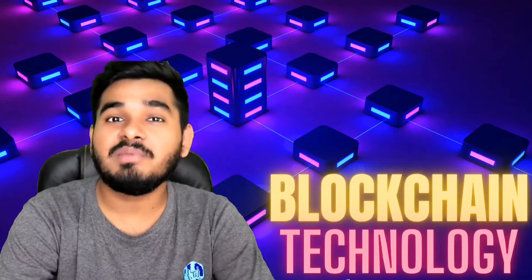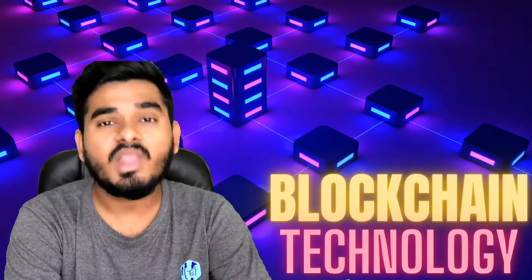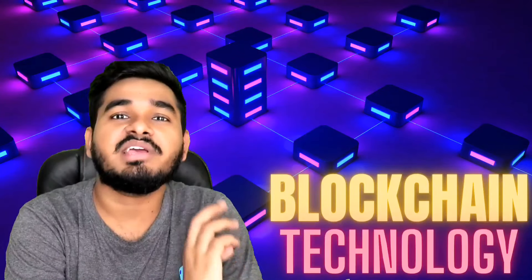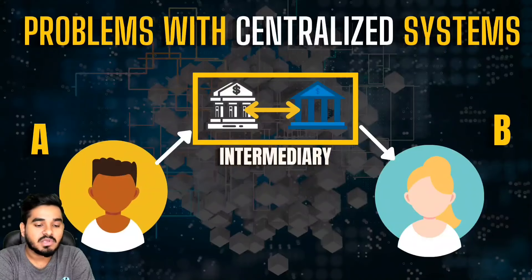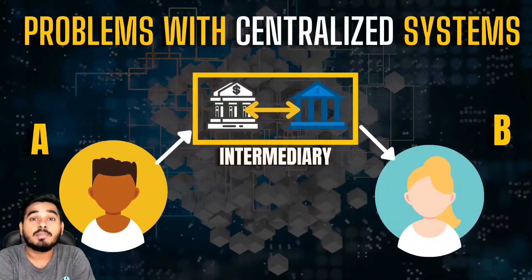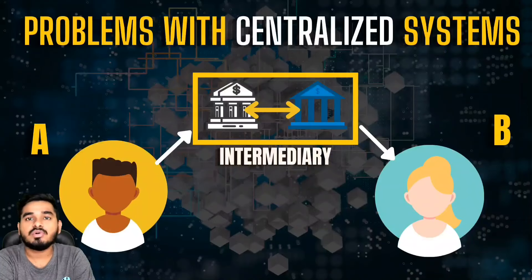That is the reason why people are showing more interest nowadays in decentralized systems. Let's consider an example of a centralized system. A centralized system is one where there is a database that is common for everyone. Take the example of a bank — a bank may have lakhs of customers, and all that data is stored in a centralized database.